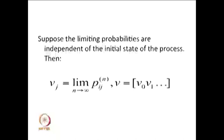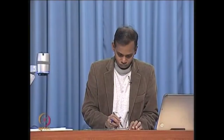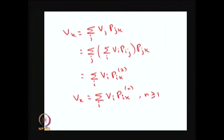The vector V consists of entries V_0, V_1, and so on, which are the limiting state probabilities. We can compute V_k as the summation over j of V_j times p_jk, where p_jk is the one-step transition probability. Substituting V_j again using the same formula and repeating, we get V_k equal to the summation over i of V_i times p_ik(n), for n greater than or equal to 1 — meaning this holds for all n-step transition probabilities.